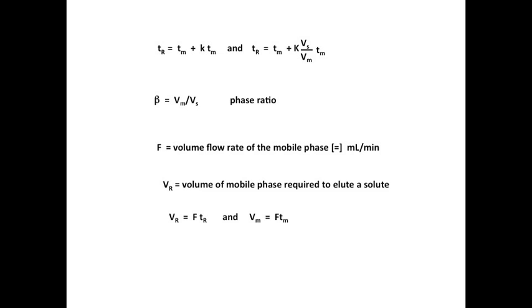If we multiply F times the time for the unretained solute peak, we get the volume for the mobile phase. This is sometimes called the void volume or dead volume for the column.